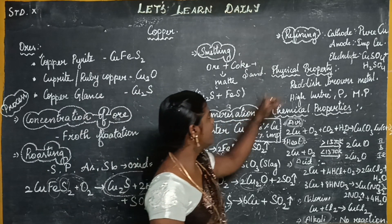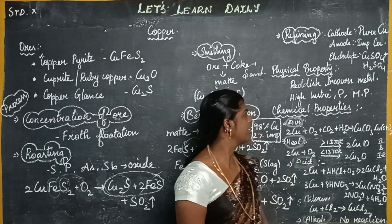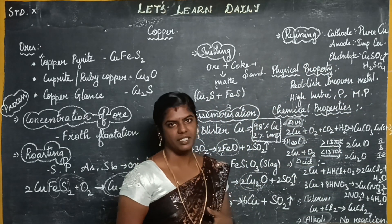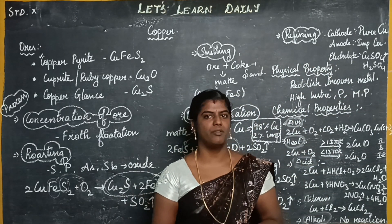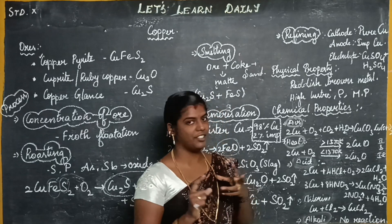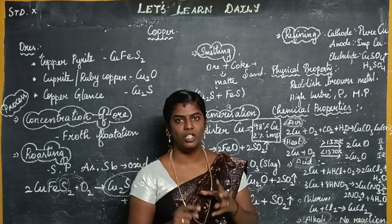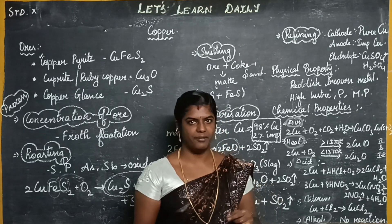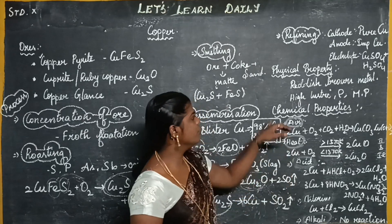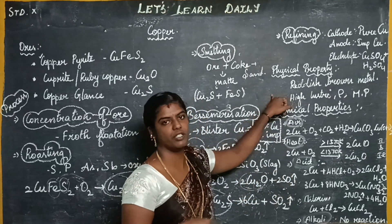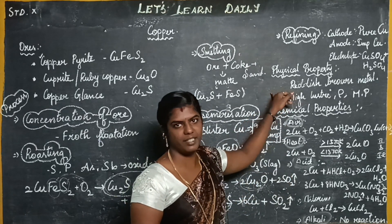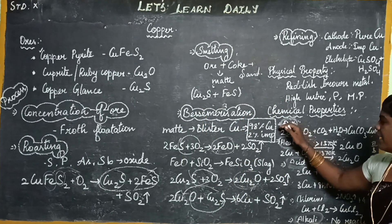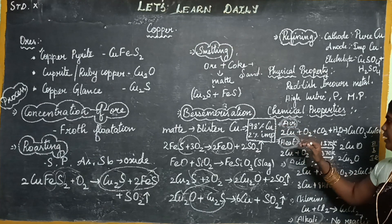These are the physical properties. It is a reddish-brown metal. It is shiny. It is easy to convert — meaning it is malleable and ductile.